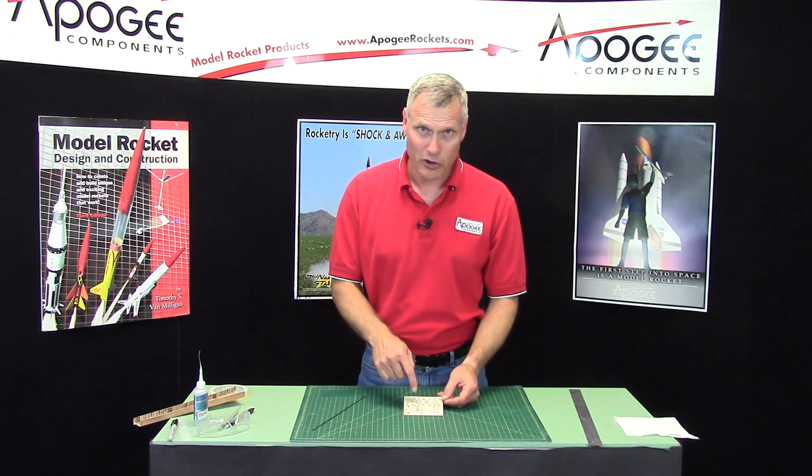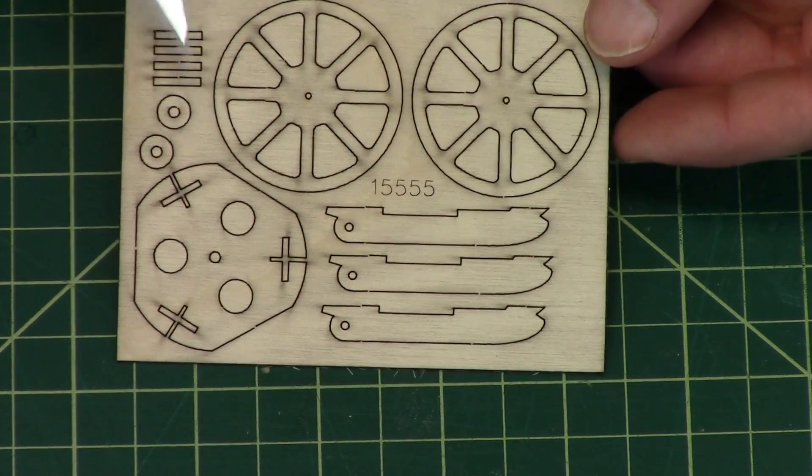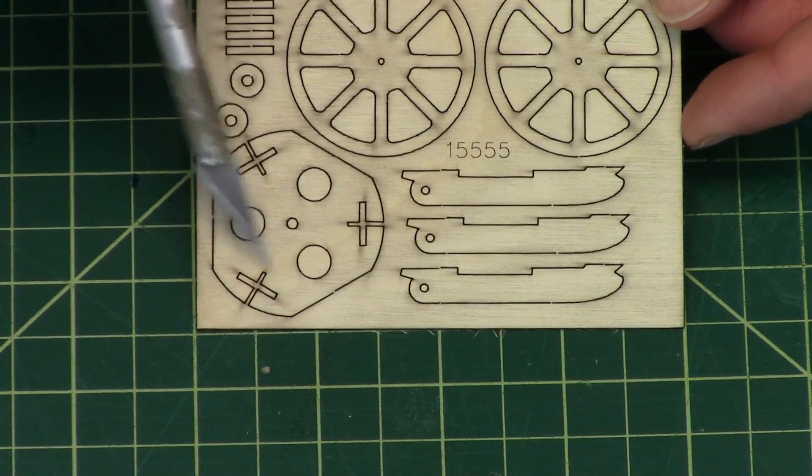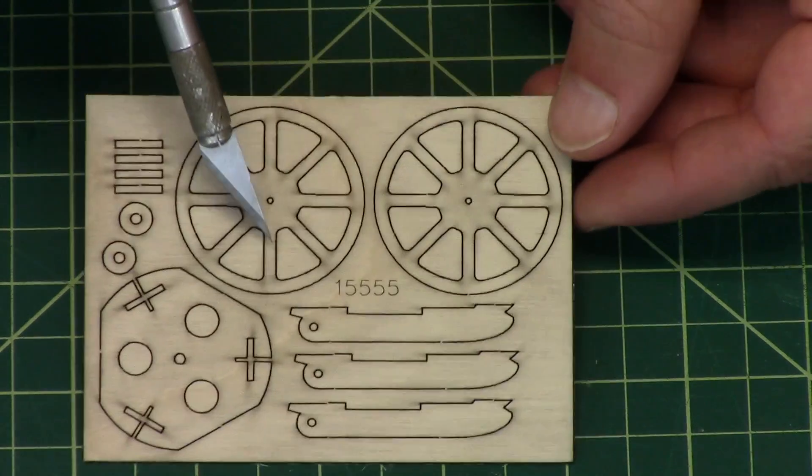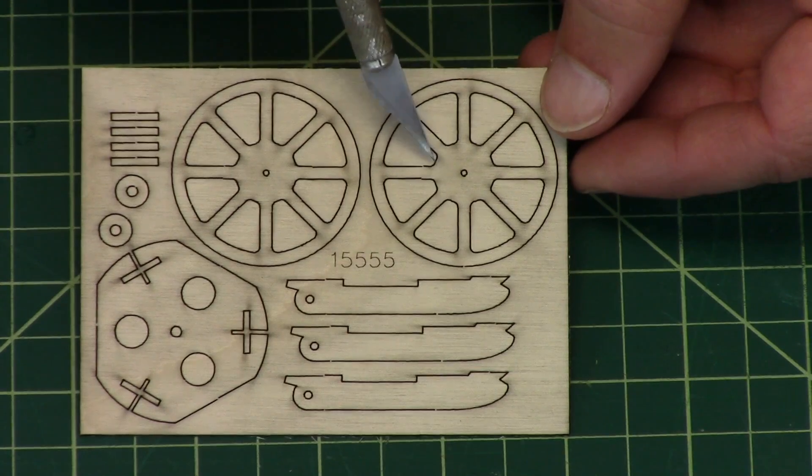These are the pieces here that are going to create the hub. I thought I'd go over them real quick. This piece right here with the small hole in the middle and the three bigger ones is the actual hub. These two that are like spoke wheels, those go in the shoulder of the nose cone.